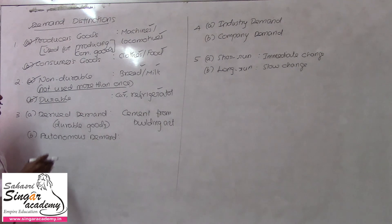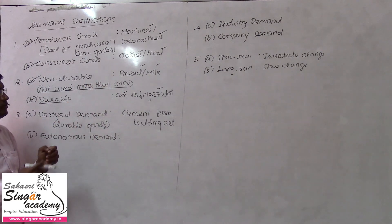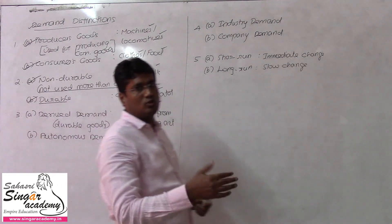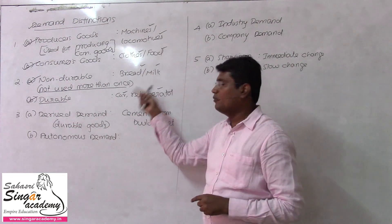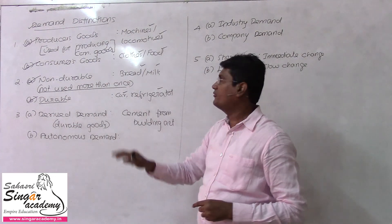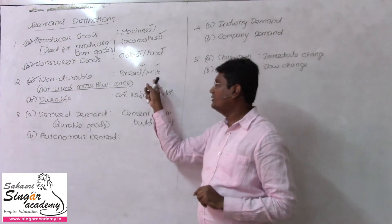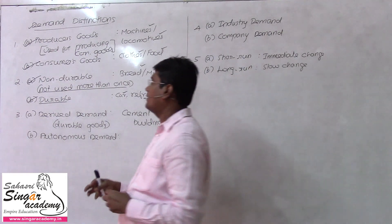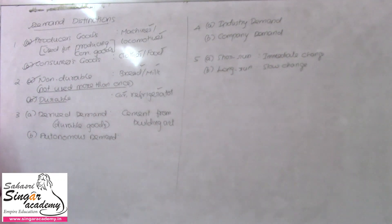You cannot withhold non-durable goods like bread and milk for a long period — they have a short shelf life. But for durable goods like a car or refrigerator, you can postpone the sale or postpone the consumption. Durable goods have a long working life.